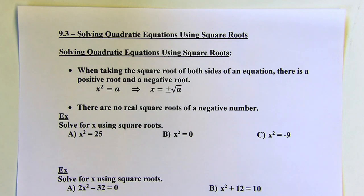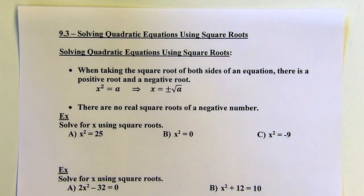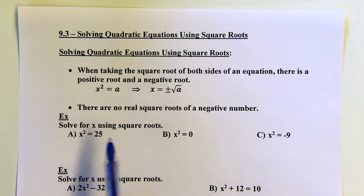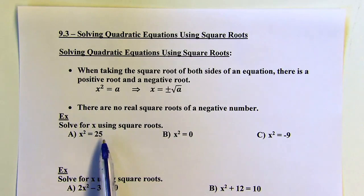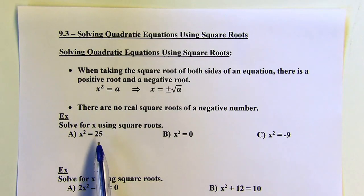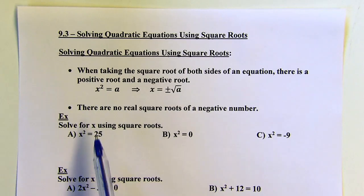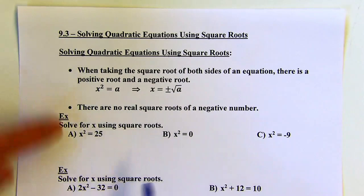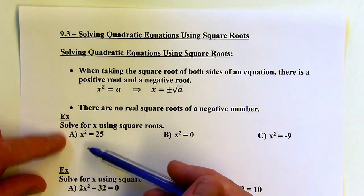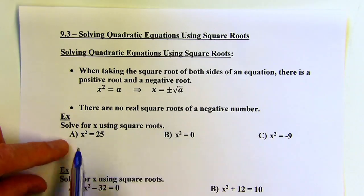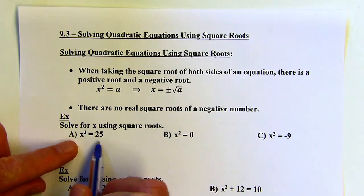Section 9.3: solving quadratic equations using square roots. So when we're solving a quadratic equation using square roots, we might have something like x squared equals 25. Let's get to this example — what we want to do is take the square root of both sides of this equation.